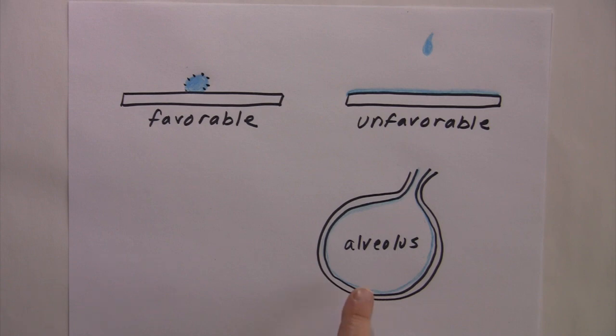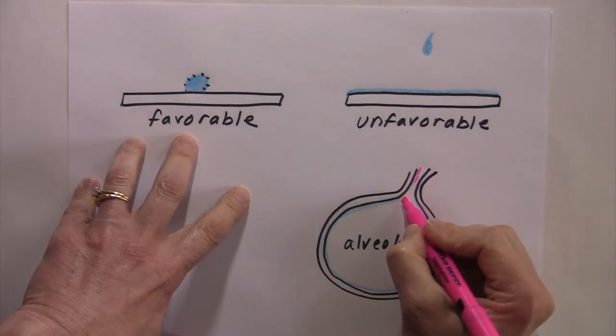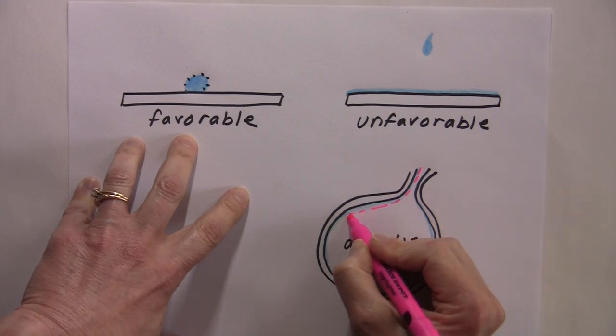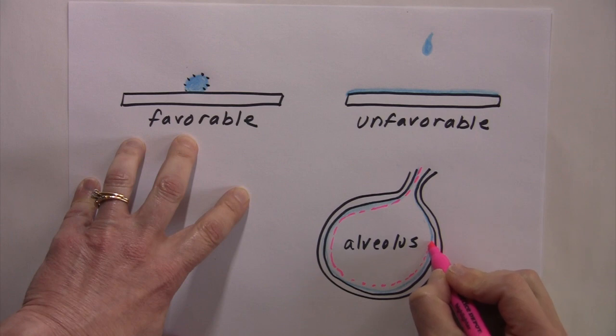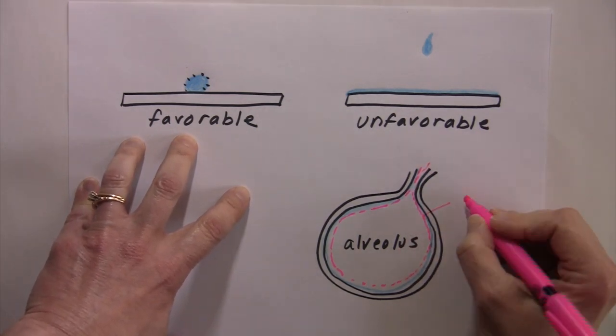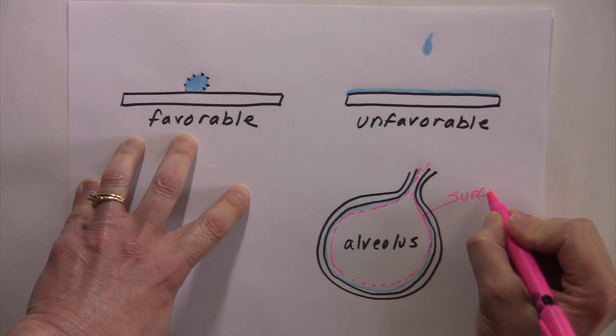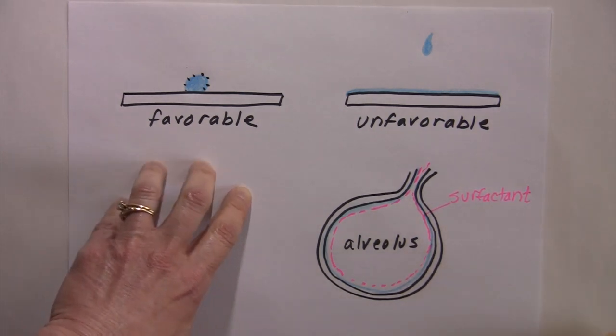As a matter of fact, the only reason that this will work is because type 2 cells release a substance called surfactant. And surfactant is an oily substance that will coat the alveoli. So I'm drawing it in here in pink. So we'll say that's the surfactant and the surfactant reminds me of like Pam nonstick cooking spray.